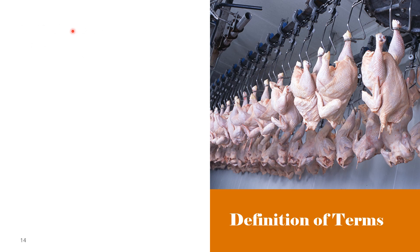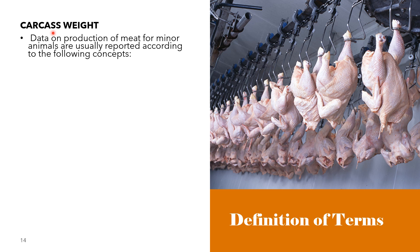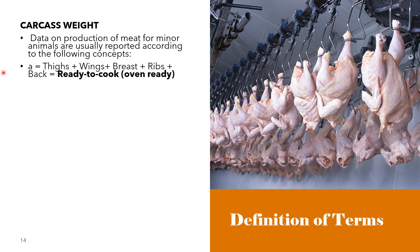For minor animals such as poultry, rabbits, game, and others, meat production data are reported according to specific concepts designated by letters. Letter A includes the thighs, wings, breast, ribs, and back — collectively called the ready-to-cook or oven-ready parts.